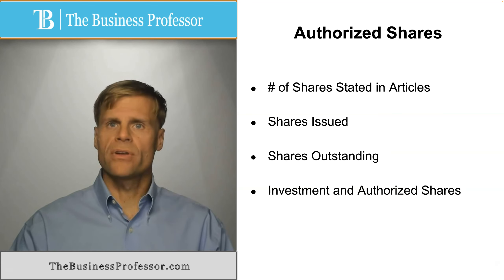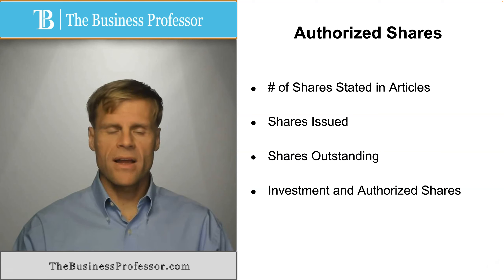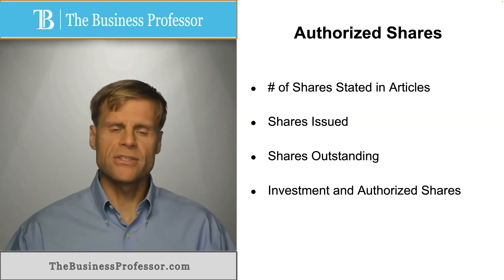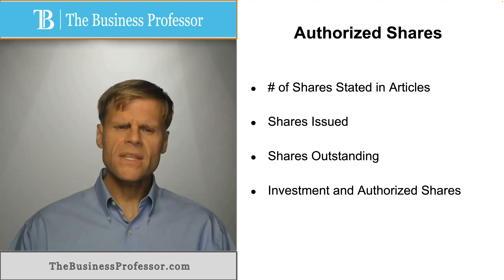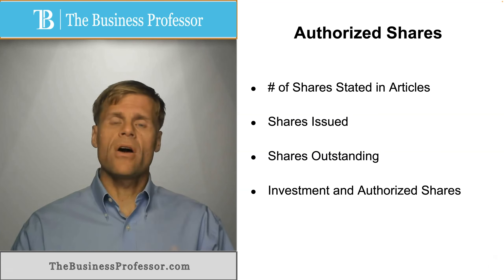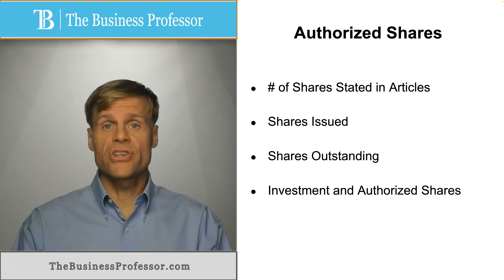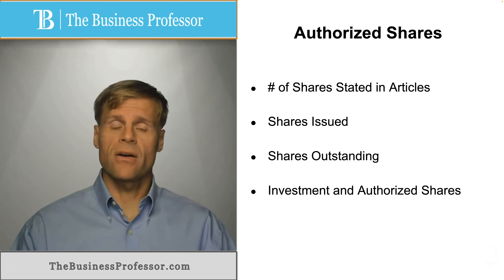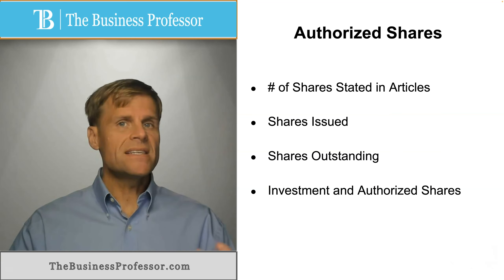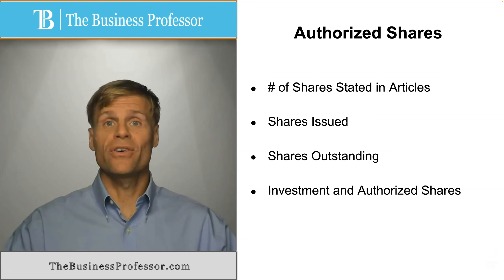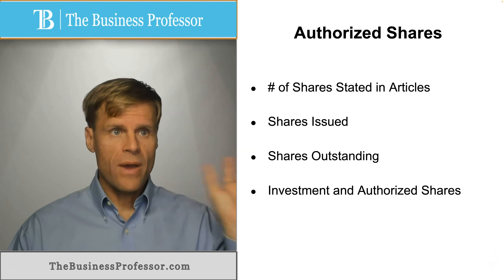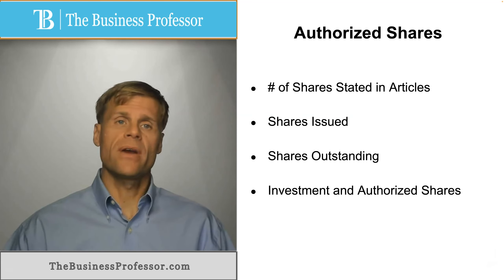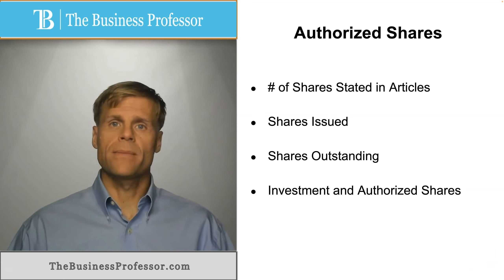Preferred stock may have preferred payment rights, dividend rights, preferred voting rights, or something of that nature. Investors oftentimes look for preferred shares, and thus you have to amend and restate the articles of incorporation. This increases the total number of authorized shares because you have your original number plus the amended or restated amount.